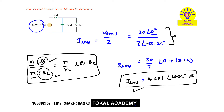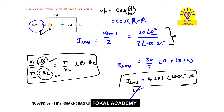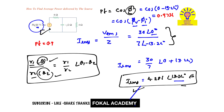Now we have RMS current and V RMS. We need the power factor. Power factor PF equals cosine of phi, where phi is the voltage phase minus the current phase. That is cosine of (phi_V minus phi_I). Here phi_V is 0 and phi_I is 13.24, so we get cosine of (0 minus 13.24), which simplifies to a power factor of 0.9734.